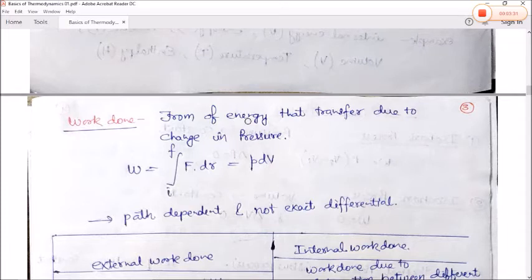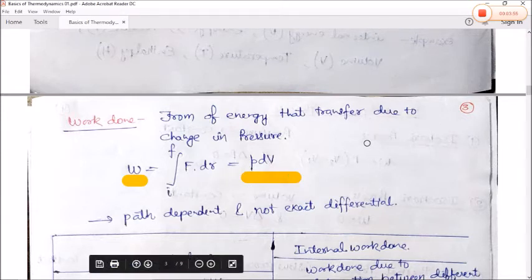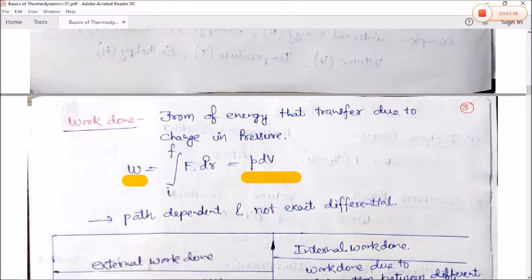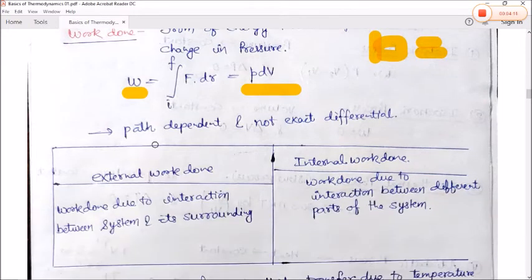Work done is the energy that transfers due to the change in pressure, W = ∫ F·dr from initial to final. This can be further expressed as W = ∫ PdV. Work done is path-dependent and is not an exact differential.